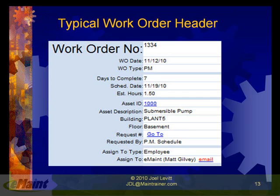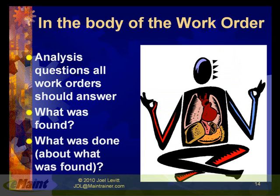I want you to look at three different parts of the picture. The first part is the header — the information you get before you do the actual work. This is what comes in from the requester. What are we going to be looking for here? We're looking for whether there's an asset number, which is a good number — are they asking us to work on something we can work on? Who is it requested by? And then what do they want us to do? Is it a PM?